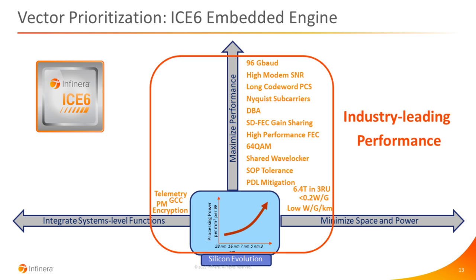In terms of these three vectors, what we're trying to do with i6 is really prioritize that performance vector — with 96 gigabaud, high modem SNR, and advanced features like long codeword PCS, Nyquist subcarriers, and dynamic bandwidth allocation. The real priority is on maximizing performance. In terms of space and power, if you do a side-by-side comparison with a 400G pluggable, the power will sound higher, but the benefit comes at longer distances — looking at watts per gig per kilometer, that's where you get the benefit from an embedded engine like i6. We're also integrating some systems-level functionality like encryption, but that's not the main focus for an embedded engine like i6.